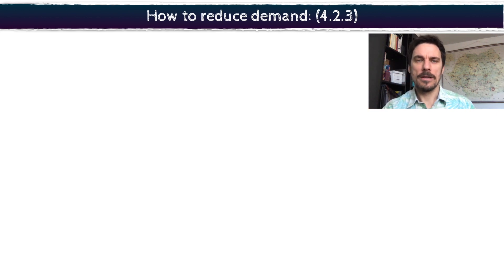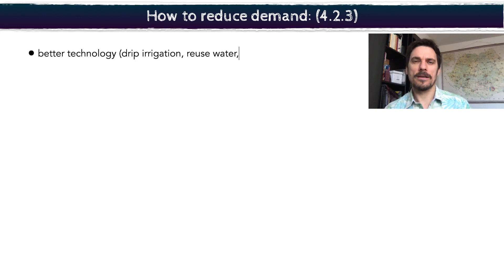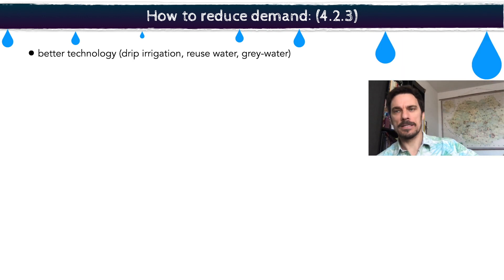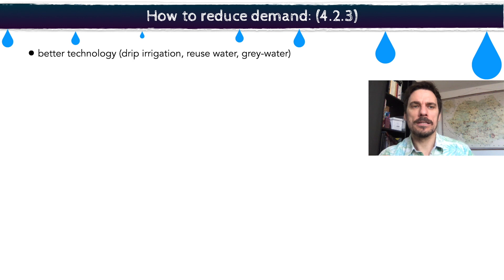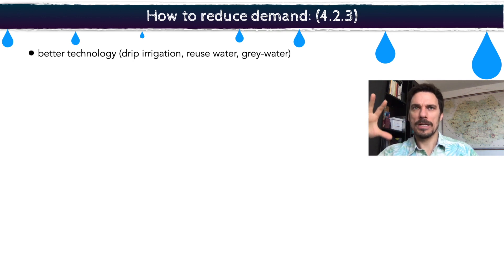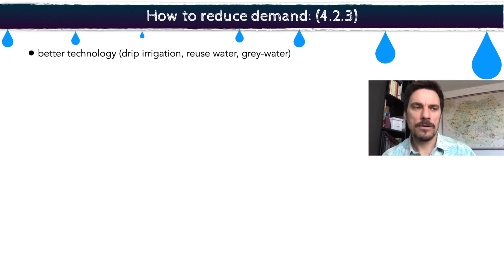Now we've looked at increasing the level of water, but what about looking at it from the other side — how do you reduce the amount of water we actually use in the first place, so we don't need more and don't have to rely on these big expensive projects? One important thing that a lot of agriculture is looking at is drip irrigation, which has been around for a long time but is now being used on a mass scale. There's also grey water — for example, water from your shower goes into a holding tank, gets filtered, and can be used for your lawn, trees, fruits, and vegetables.